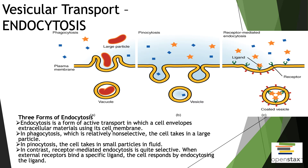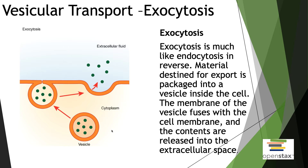Another way things can move inside the cell is endocytosis. A large particle outside the cell comes in contact with the plasma membrane, which then envelops that particle and moves it inside the cell. Exocytosis is the reverse process — the same mechanism but moving things out of the cell instead of in.